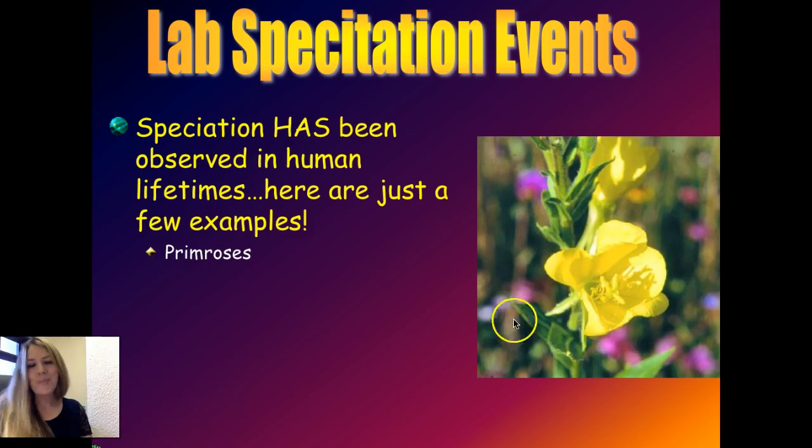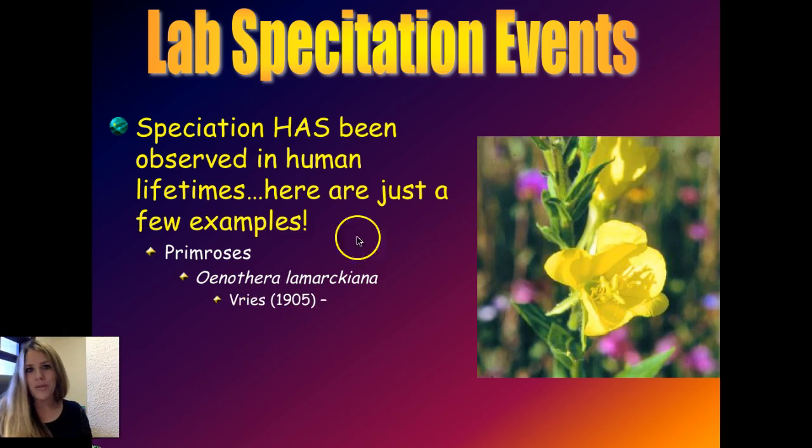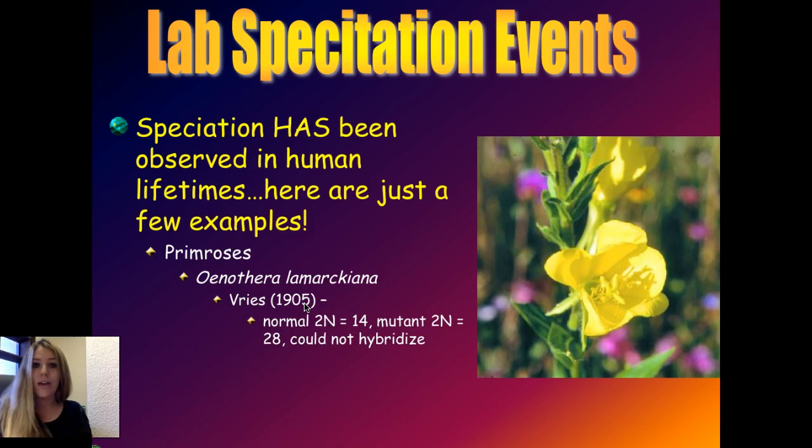Here's one example. This is a primrose. There's been cases where this primrose of the species - this was documented way back in 1905. You can see that as they raised these guys in the laboratory and had them in different areas separated from each other, some individuals of one population actually ended up changing their diploid number of chromosomes. So the normal diploid number was 14. In this mutant variety, it was 28. And as a result of that happening, where there was a duplication in chromosome number, those two were no longer able to breed together.